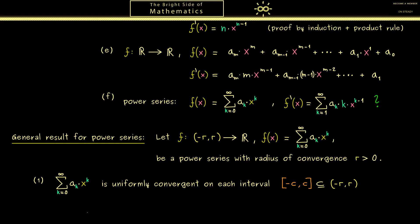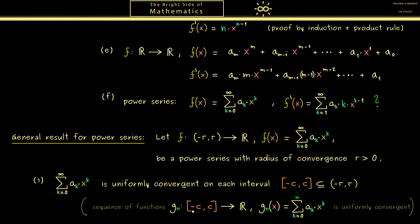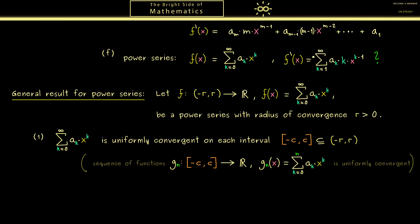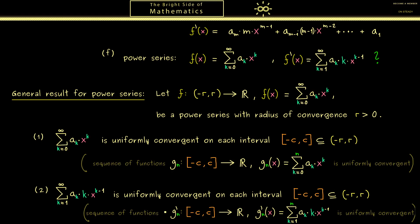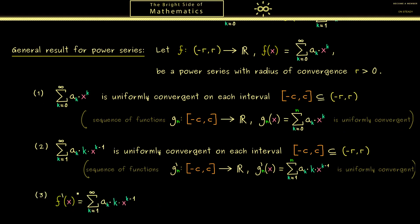We can explain this with a sequence of functions gn, with domain minus c to c, defined as the finite sum with end index n. This sequence of functions is indeed uniformly convergent, with limit function f restricted to minus c to c. The new differentiated power series is also uniformly convergent on every compact interval inside the domain. The sequence of derivatives of gn is itself the derivative of gn, so we have uniform convergence for the derivatives, and we can apply the result from the last video: f is differentiable and the derivative is given by the limit function of these derivatives — exactly our presumption.